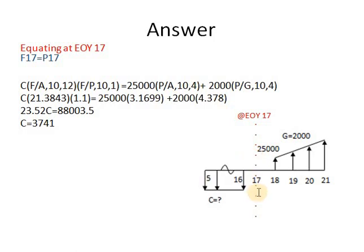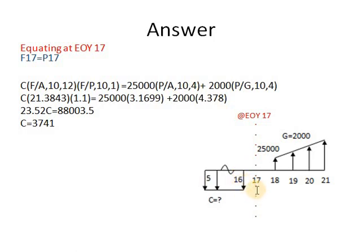I decided to equate at the end of year 17. On the deposits side, I get the future of the annuity. The future is located at the last arrow, so F equals A into F/A at 10% and N periods. The number of periods from year 5 to year 16 inclusive is 12 years.